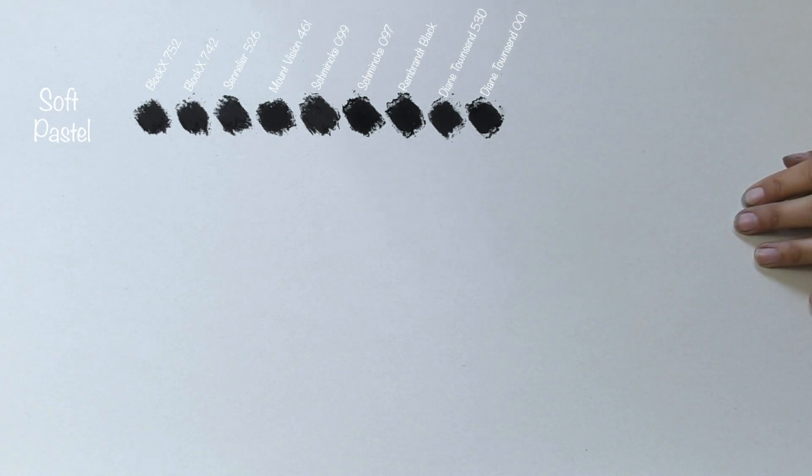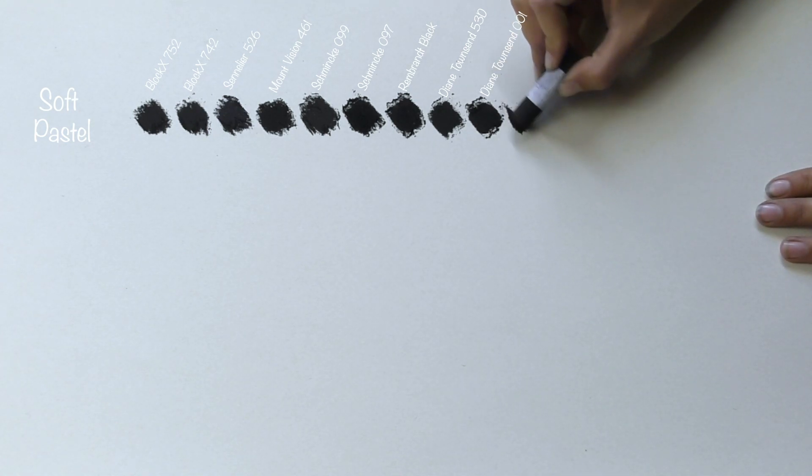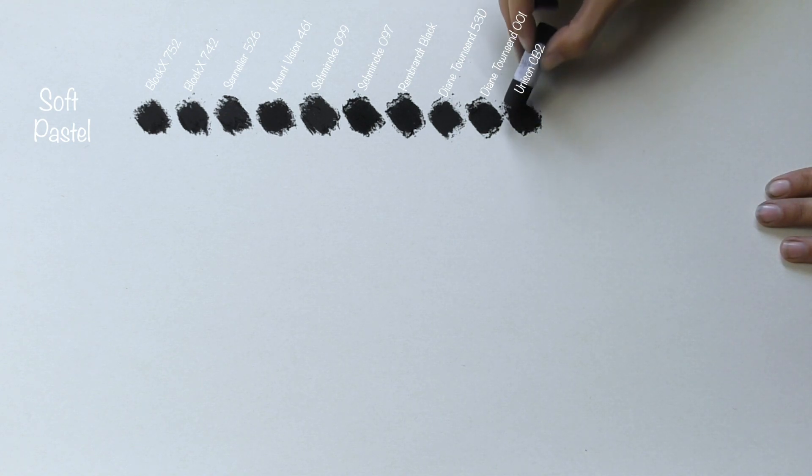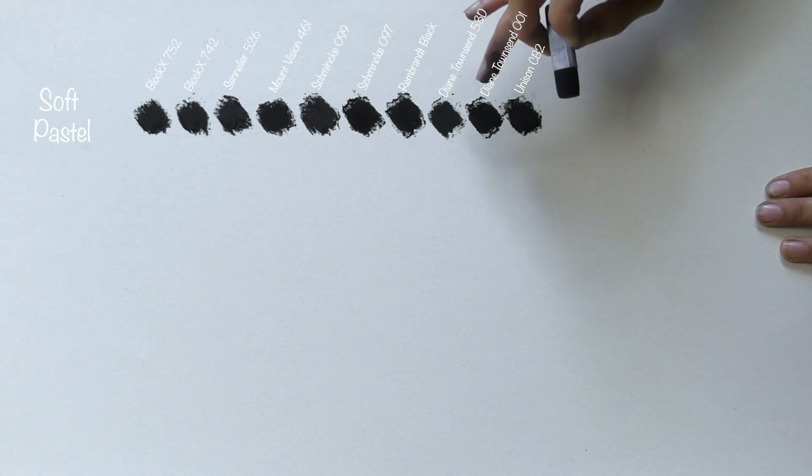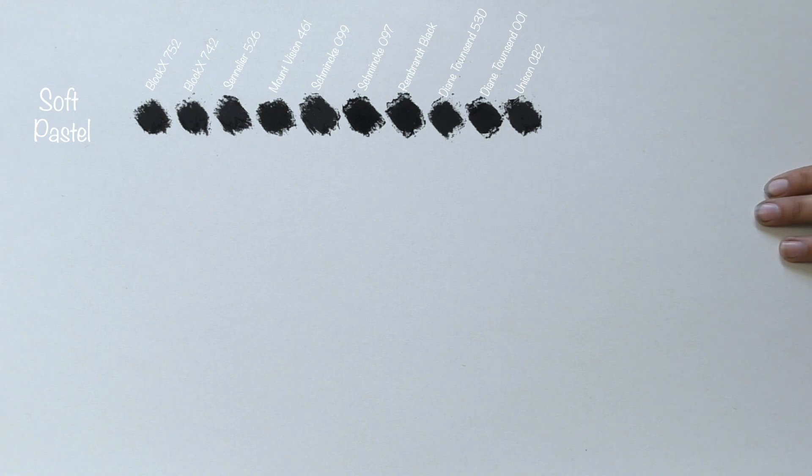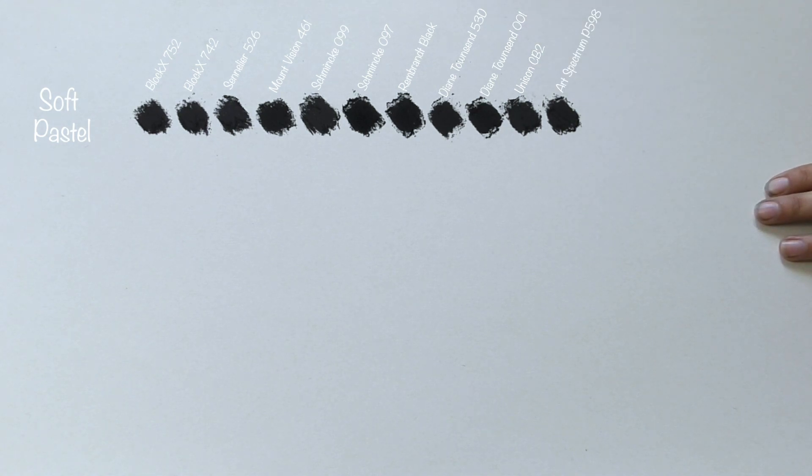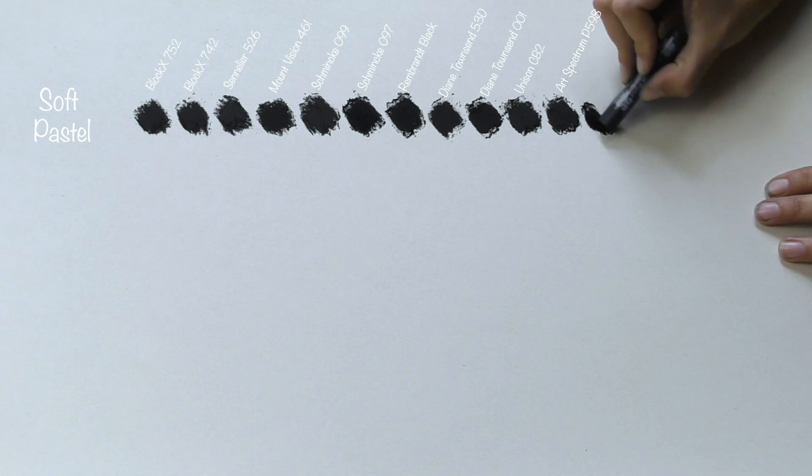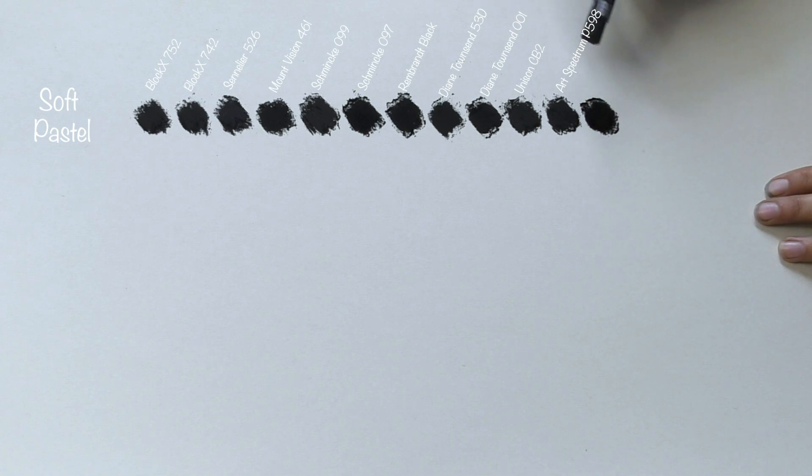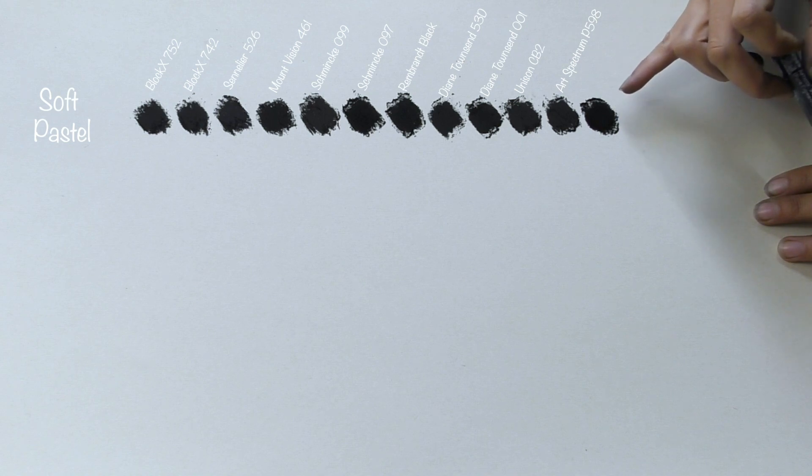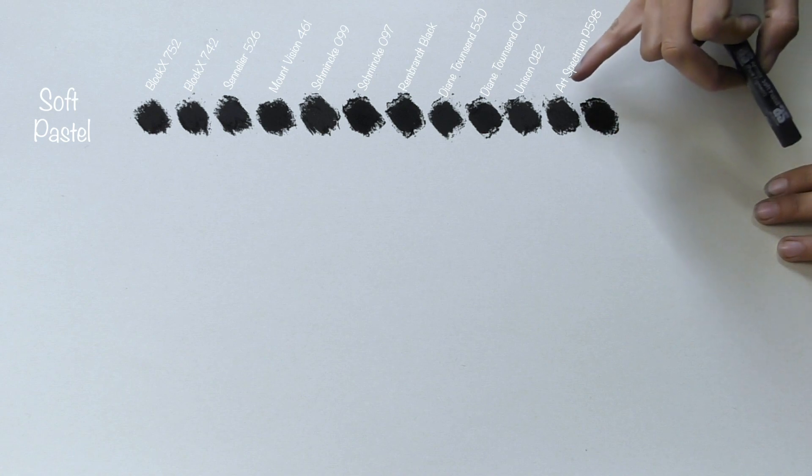Next we have one of my favourite brands, Unison. And when I first started using Unison, they didn't have a great black in their range. Within the last couple of years, they've added this lovely CB2, and that is good. That really stands up well against the Diane Townsends. Next we have Art Spectrum, a brand that I haven't used very much of. But I am well impressed with these blacks. We've got a couple of the Art Spectrums, that's their Ivory Black, this one is their Lamp Black. And I often find that the Lamp Black gives you that really rich dark black. So yes, I think that their Lamp Black is darker than their Ivory Black.